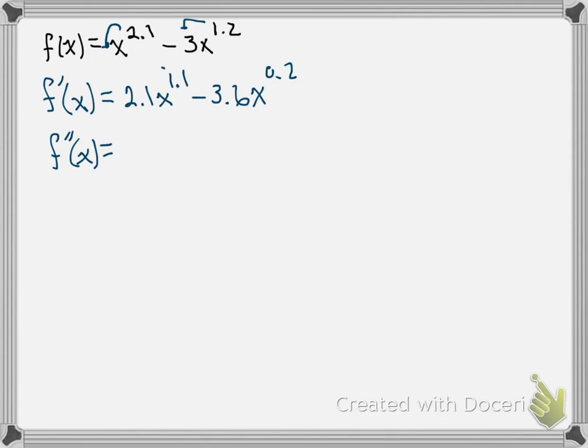On this first one, we're going to end up with 1.1 times 2.1, which gives us 2.31, x, decrease the power by 1, 0.1, minus.